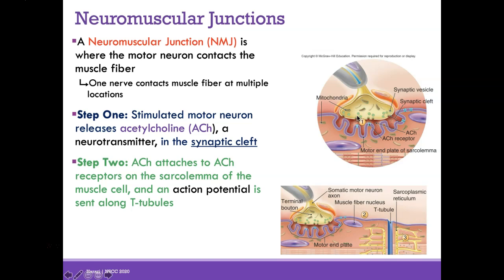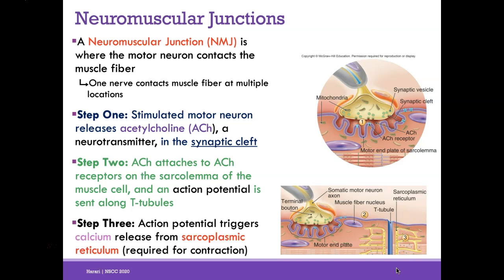Acetylcholine released from the neuron binds to acetylcholine receptors on the sarcolemma, creating an action potential that is sent along the sarcolemma and down the T-tubules into the muscle cell. Step three: this action potential triggers calcium release from the sarcoplasmic reticulum once it is transmitted along the muscle fiber. Calcium is required for contraction — pause here and make sure you understand steps one, two, and three.